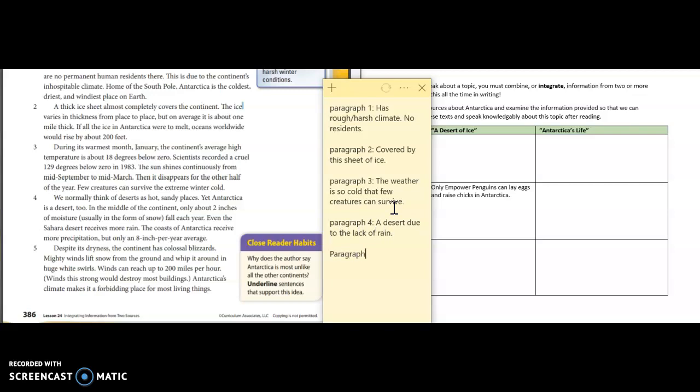And the last paragraph, paragraph five: Despite its dryness, the continent has colossal blizzards. Mighty winds lift snow from the ground and whip it around in huge white swirls. Winds can reach up to 200 miles per hour. Winds this strong would destroy most buildings. Antarctica's climate makes it a forbidding place for most living things. All right, so they have strong winds during blizzards.